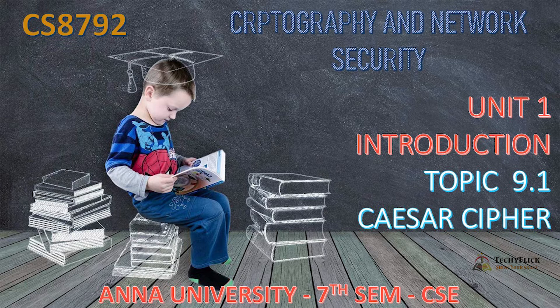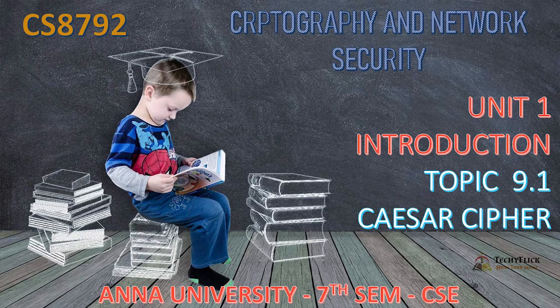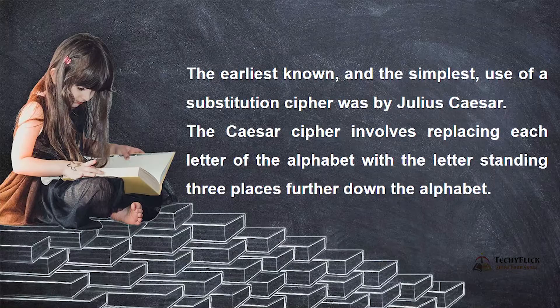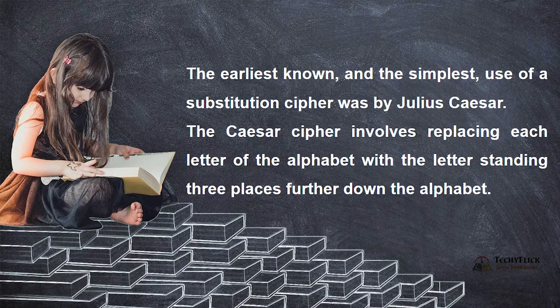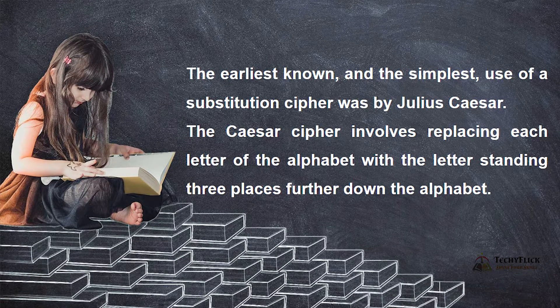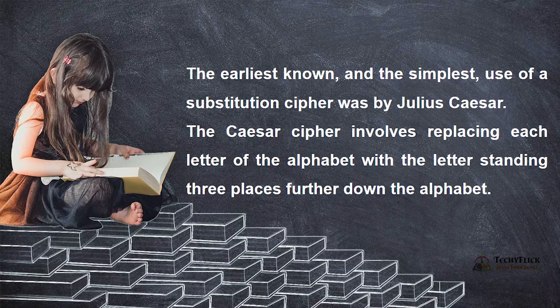CS 8792 Topic 9.1 Caesar Cipher. Let us see the definition of Caesar cipher. The earliest known and the simplest use of a substitution cipher was by Julius Caesar. The Caesar cipher involves replacing each letter of the alphabet with the letter standing three places further down the alphabet.